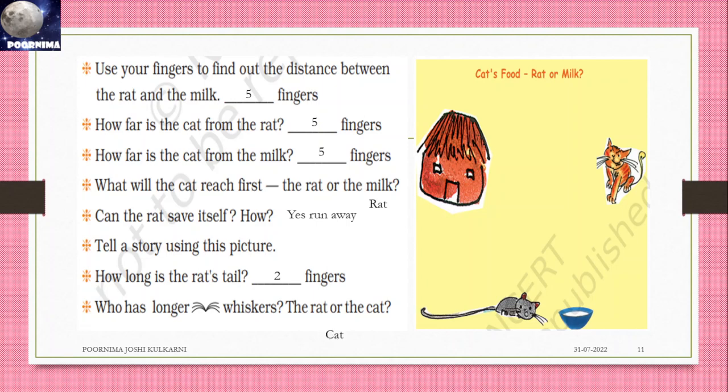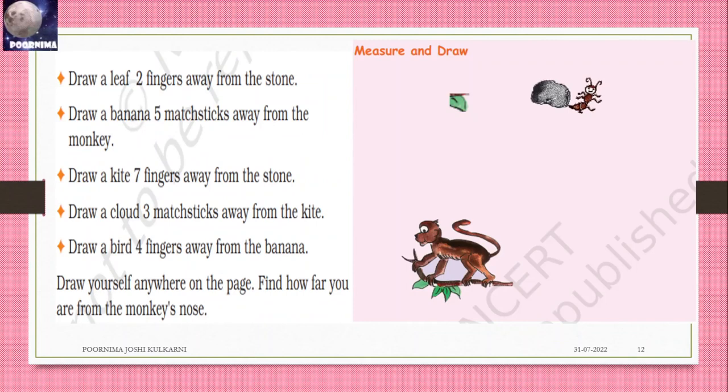Listen and draw: Draw a leaf two fingers away from the stone, and draw a banana five matchsticks away from the monkey. Draw a kite seven fingers away from the stone.